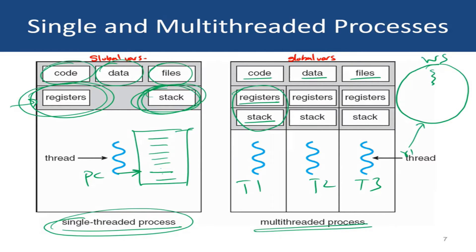Let's try to understand the working of a multi-threaded process with the help of our previous web server example. Let's assume we have a multi-threaded web server. The original thread of the web server keeps waiting for incoming requests. Whenever there is a new request R1 from the client, the web server will create a new thread T1 and redirect the client request to it. Similarly, when another request R2 comes in, the web server creates thread T2 and redirects that request to T2 for service. The program logic that threads T1 and T2 need is the same as in the original web server, which is why the code and data section is shared across all the threads.